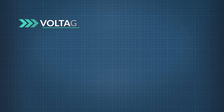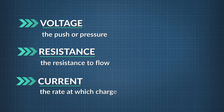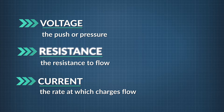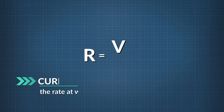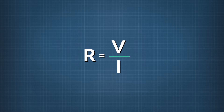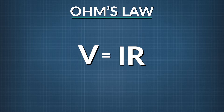So let's recap: voltage is the push or pressure, resistance is the resistance to flow, and current is the rate at which charges flow — current results from voltage and resistance. There's a formula showing that resistance is inversely proportional to current when voltage is kept constant: resistance equals voltage divided by current. You might also have seen it arranged as V equals IR, or voltage equals current times resistance. This relationship is known as Ohm's Law, after German physicist Georg Ohm, who figured out that in certain materials voltage is directly proportional to current.